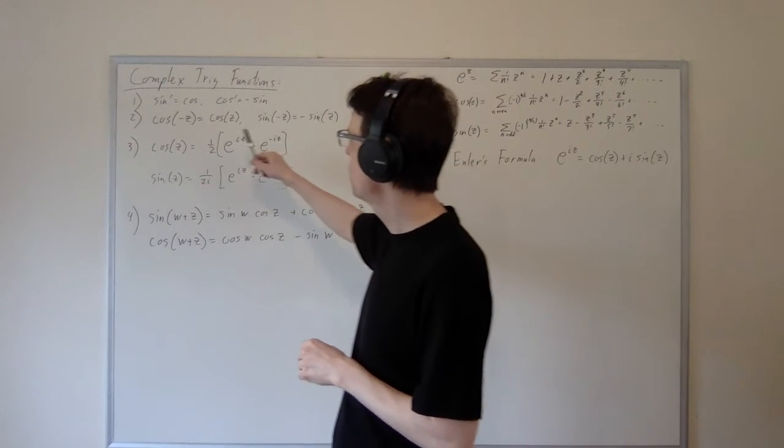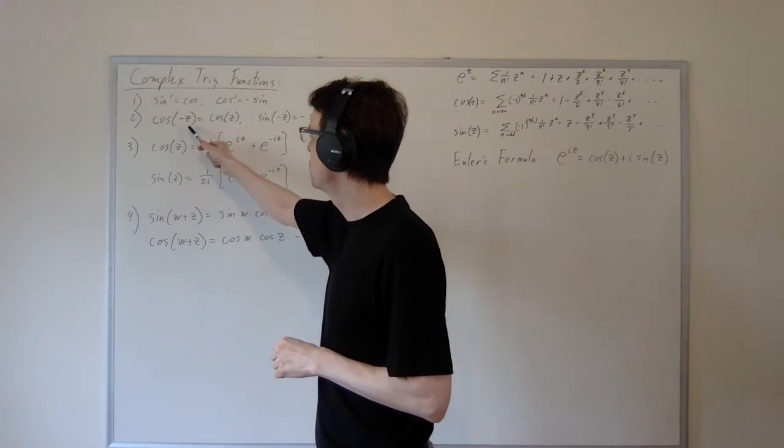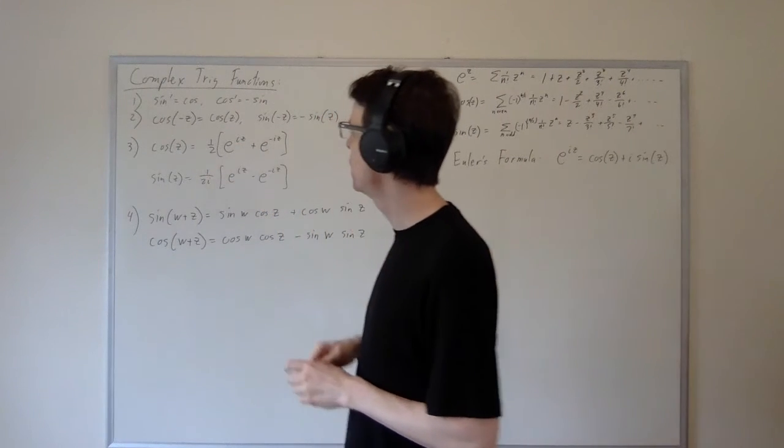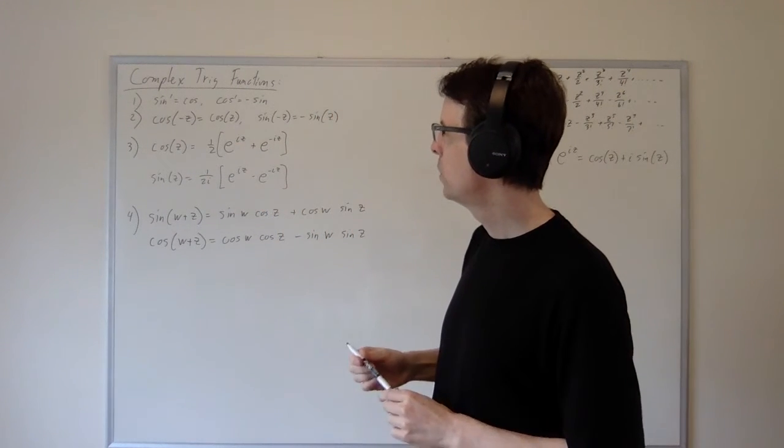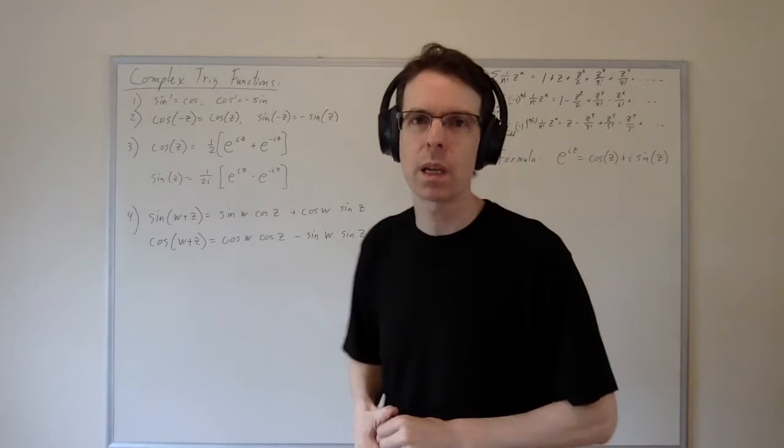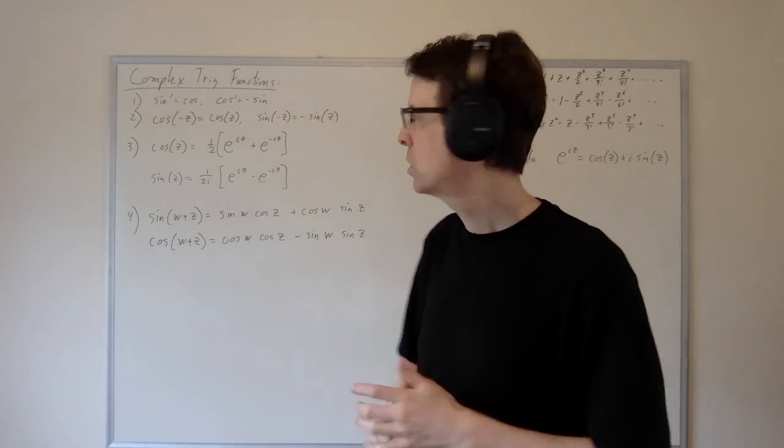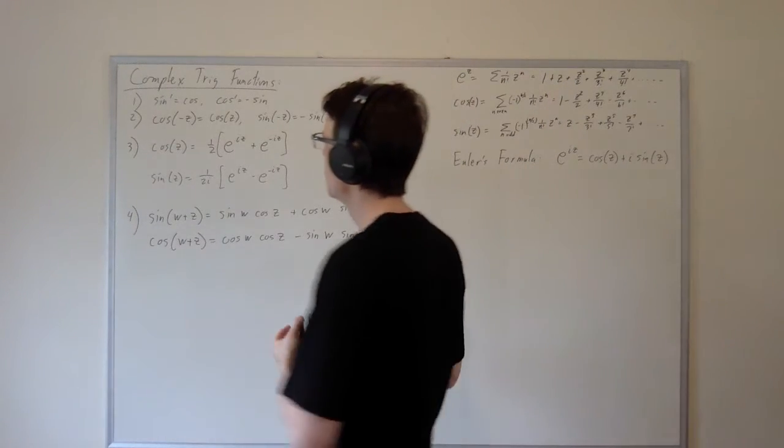First we're going to prove the familiar features of cosine and sine. The cosine is an even function and sine is an odd function. This is very basic and I'm just going to sketch what you do in order to prove this.